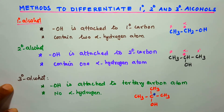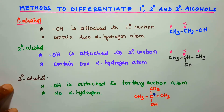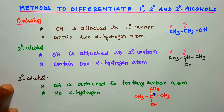Which one of the following is a tertiary alcohol? It depends on the compound structure — specifically the number of alpha hydrogen atoms on the carbon bearing the OH group, which tells us whether it is primary, secondary, or tertiary alcohol.